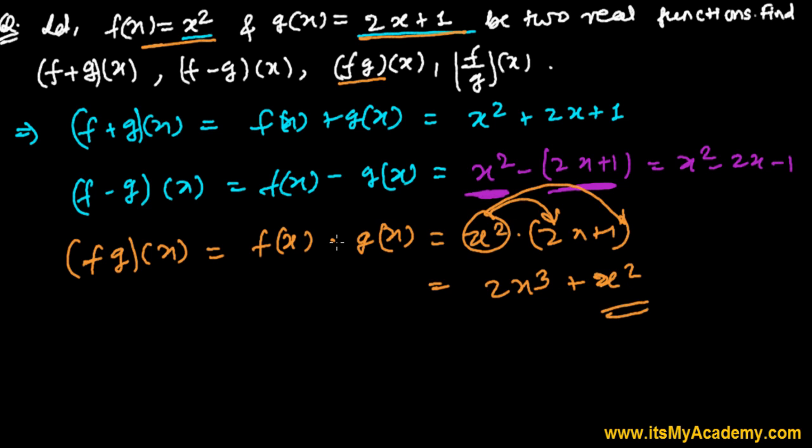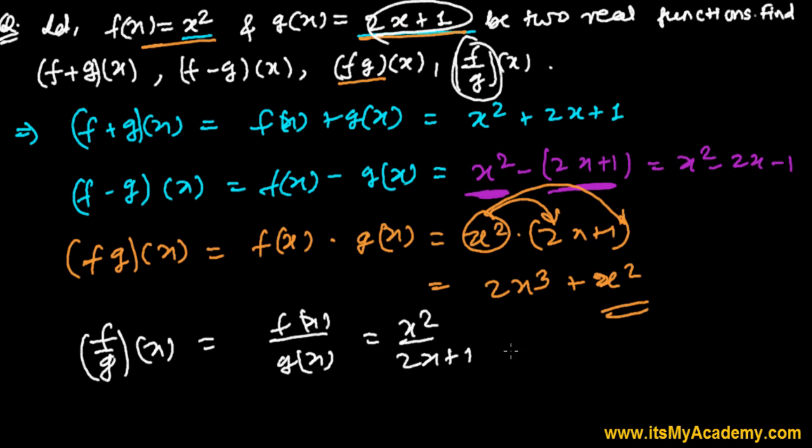And the final one is the quotient of the function, (f/g)(x), that is f(x) divided by g(x). So f(x) is x² and g(x) is 2x + 1. Therefore, (f/g)(x) = x²/(2x + 1), and that's it.